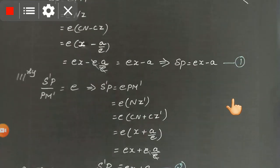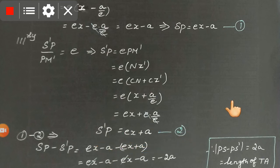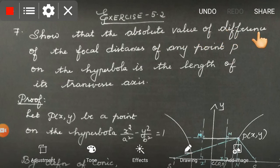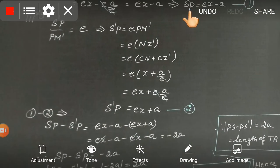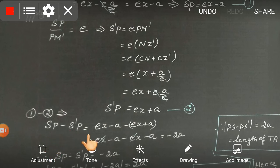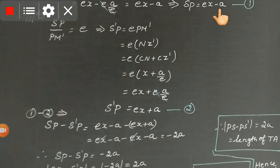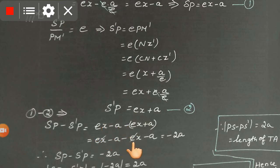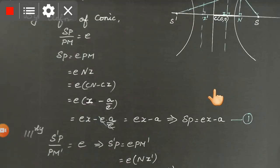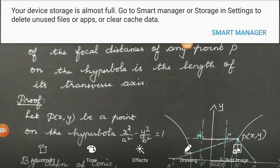We have SP from Equation 1 and S'P from Equation 2. The question asks for the absolute value of the difference of the focal distances, so subtract Equation 2 from Equation 1: SP minus S'P equals (ex minus a) minus (ex plus a). Open the bracket: ex minus a minus ex minus a. Ex minus ex cancels, leaving minus a minus a, which equals minus 2a. Taking the absolute value, |SP minus S'P| equals |minus 2a| equals 2a.